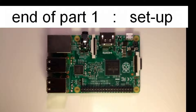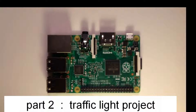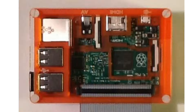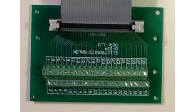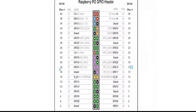That is the end of part 1, introduction and setup. We now move on to part 2, the traffic light project. This shows the Raspberry Pi now in its case and with the ribbon cable attached. This shows the breakout board with the ribbon cable attached. Please note that the pins for the breakout board are numbered. It is useful to print out a copy of the GPIO header pins and also to write in the equivalent pin number from the breakout board.